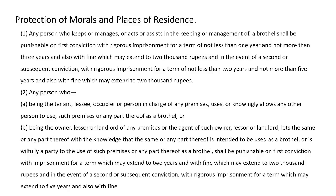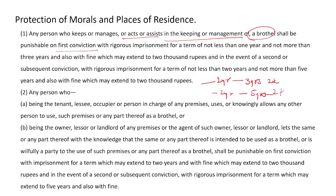Protection of morals and places of residence: any person who keeps, manages, acts, or assists in keeping or managing a brothel shall be punishable on first conviction for not less than one year and not more than three years, and a fine which may extend to two thousand rupees. On a second conviction, not less than two years but not more than five years, and a fine of two thousand rupees. Any person who is the tenant, lessee, occupier, or person in charge of such premises, or the owner, lessor, or landlord of such premises, or agent of such owner or landlord shall also be punished.